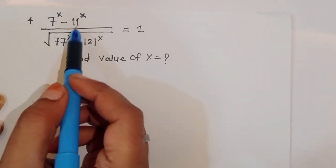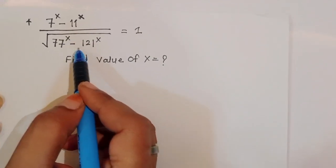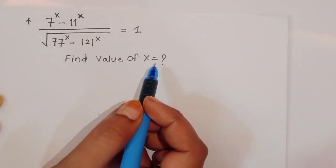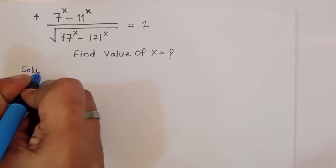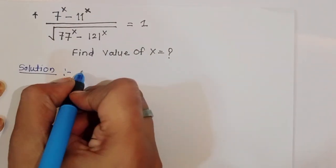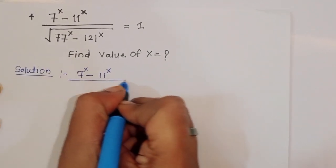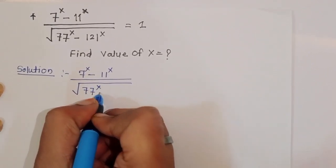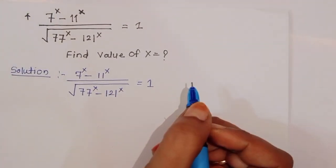The question is: 7 power x minus 11 power x, divided by the square root of 77 power x minus 121 power x, is equal to 1. We have to find out the value of x.